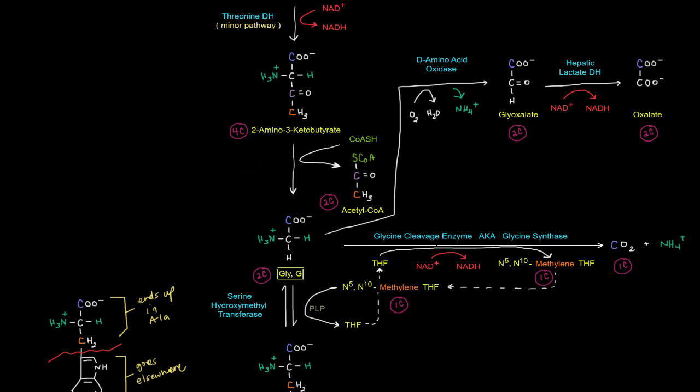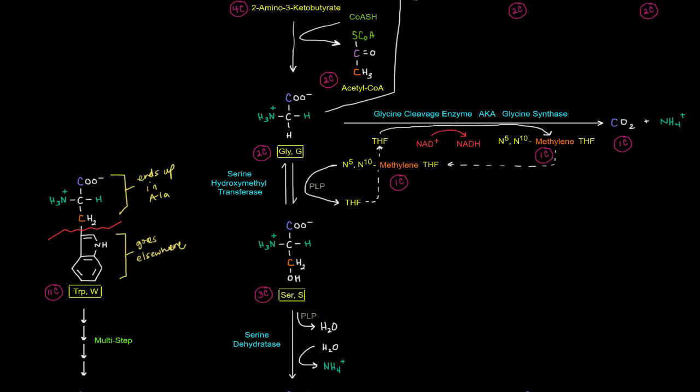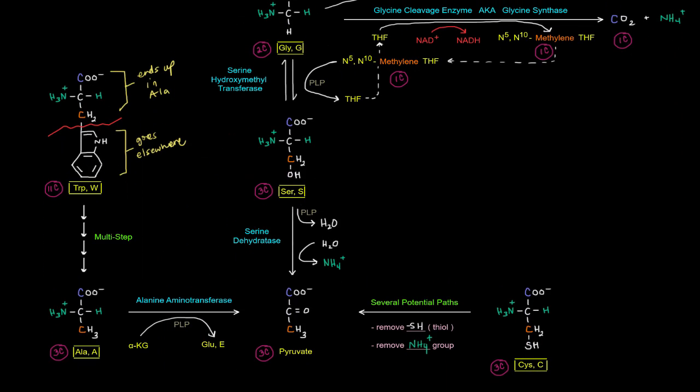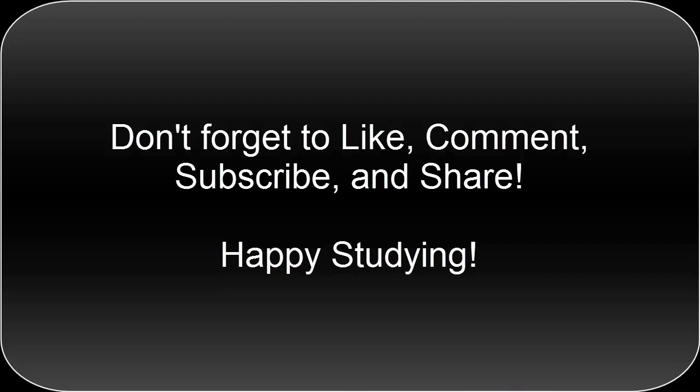So that was kind of an aside, but that's basically how all these amino acids can give rise to pyruvate. And of course, pyruvate can then go through the pyruvate dehydrogenase complex. And eventually through the TCA cycle, we can get a bunch of NADHs, FADH2s, and GTPs. And of course, that's all energy. Hope that video was helpful. Thank you for watching. If you found that video helpful, don't forget to like, comment, subscribe, and share with friends. Thank you and happy studying.